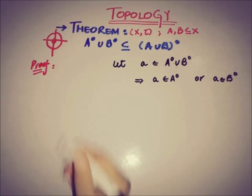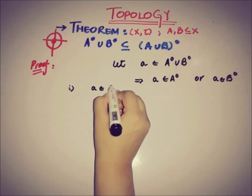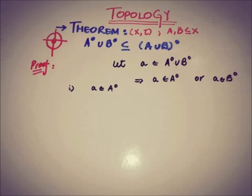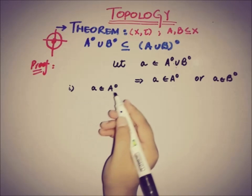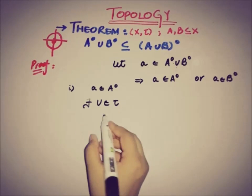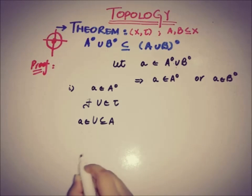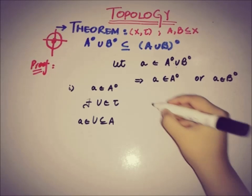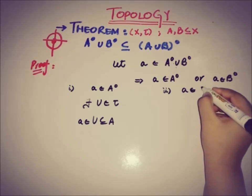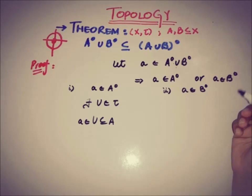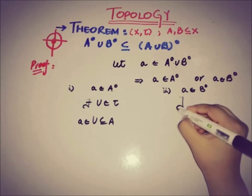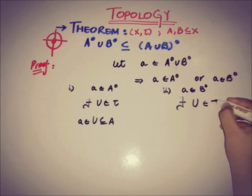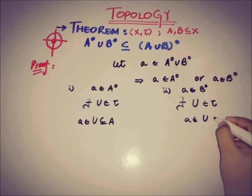So there are two cases: a belongs to A-interior, or a belongs to B-interior. For the first case when a belongs to A-interior, we use the definition of the interior: a is said to be an interior point of A if there exists an open neighbourhood U such that U is a subset of A and a belongs to U. Similarly, if a belongs to B-interior, then by the definition of interior point, there exists an open set U that contains a and is also a subset of B.